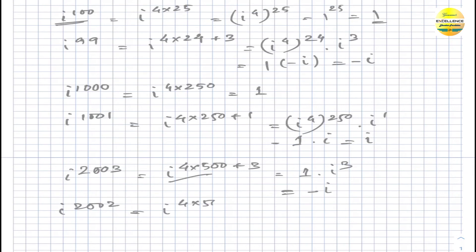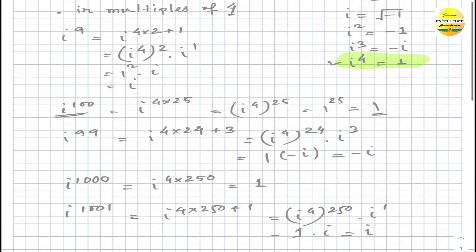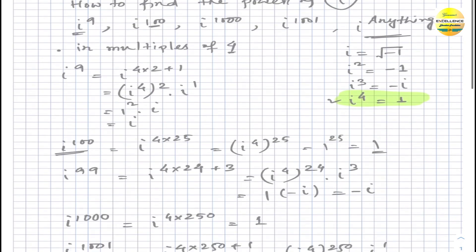Similarly, i to the power 2002 can be written as i to the power (4×500 plus 2). This gives i squared, and the value of i squared is minus one.